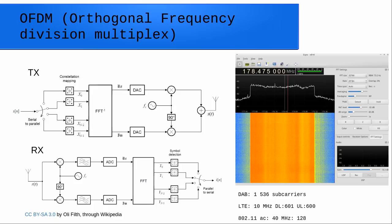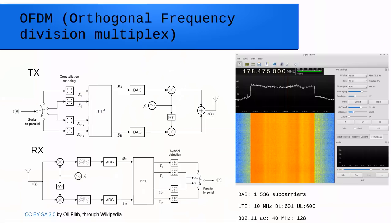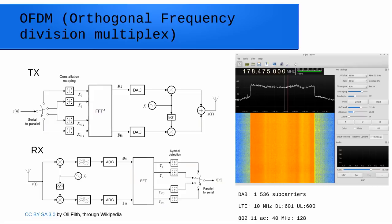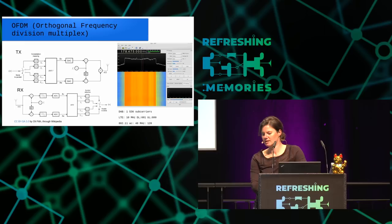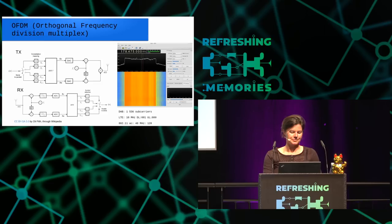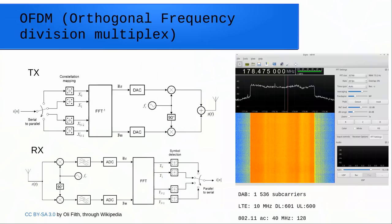Often a guard interval is added to the symbol to cope with more delays. For example, DAB is a broadcasting system with the capability of single-frequency networks — different transmitters on the same frequency with the same program — but in overlapping areas this results in very large delays, which is why the broadcasting system has very many carriers. LTE in the downlink with 10 MHz bandwidth has 601 carriers, in the uplink 600. 802.11ac with 40 MHz bandwidth has 128 carriers.